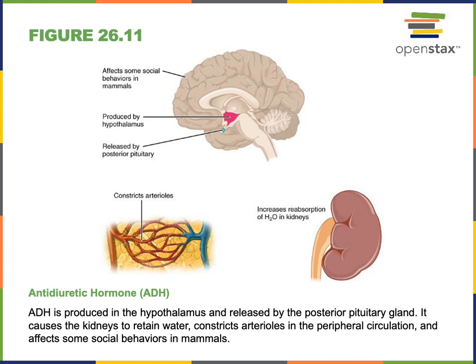The posterior pituitary releases antidiuretic hormone in response to dehydration. It then travels through the blood to the kidney, where it stimulates water reabsorption. The kidney is one target organ regulated by antidiuretic hormone, but it also affects the smooth muscle in the walls of arterioles — small blood vessels — stimulating their constriction, which increases blood pressure.